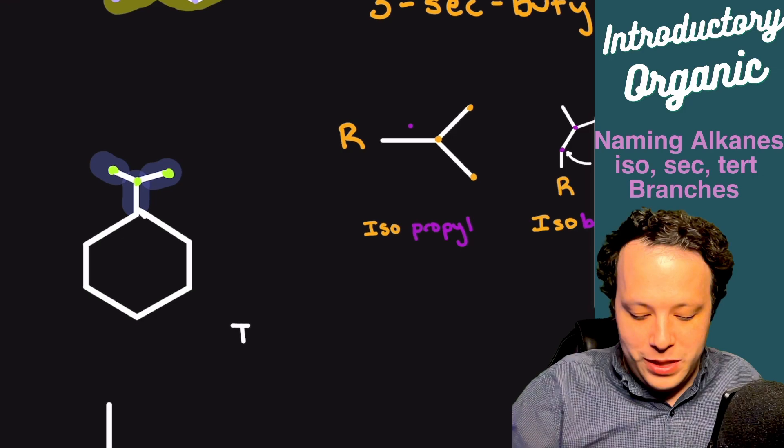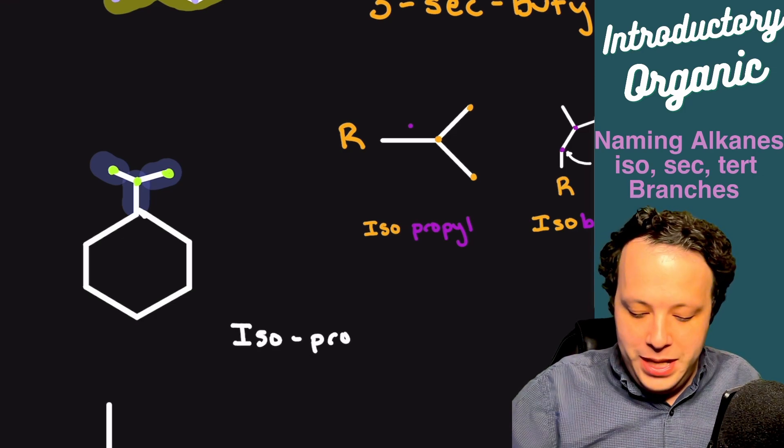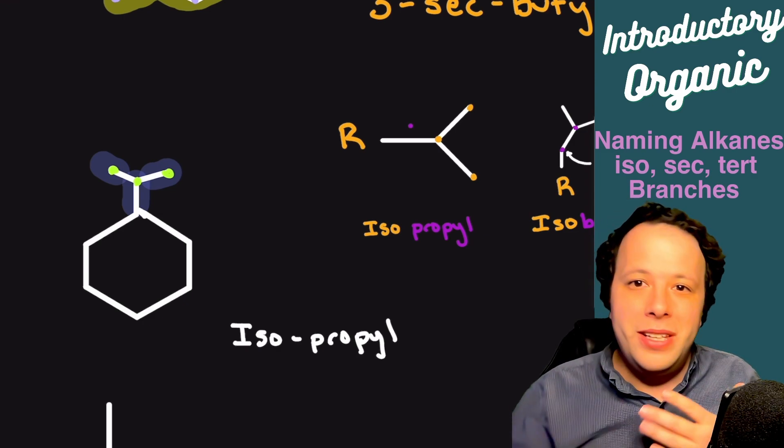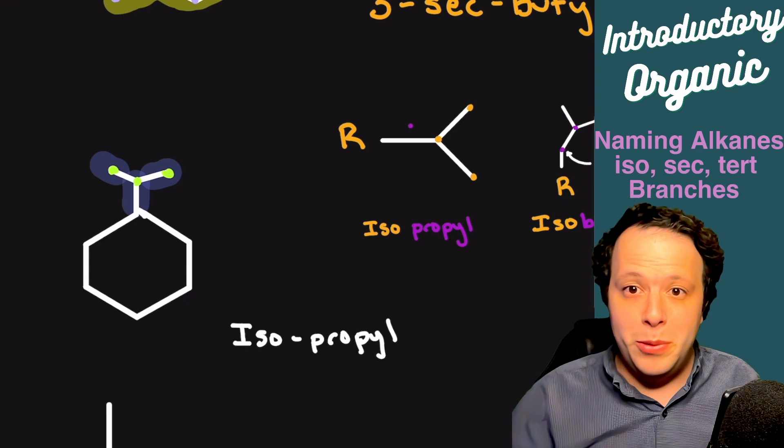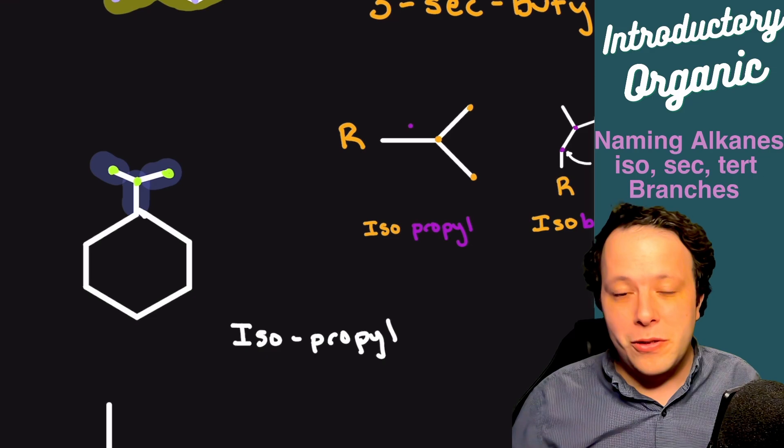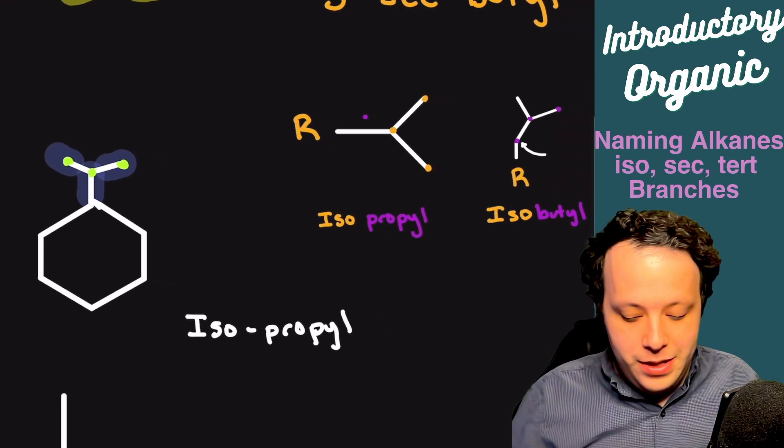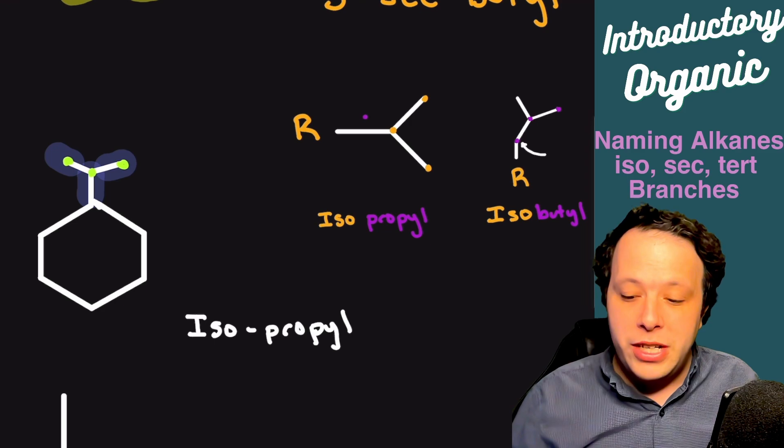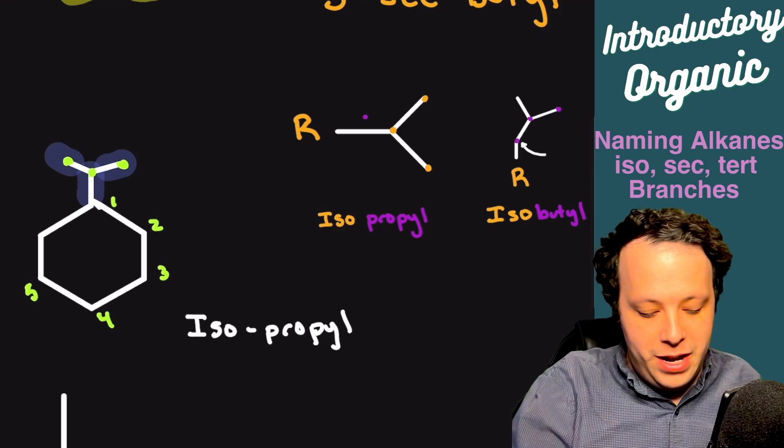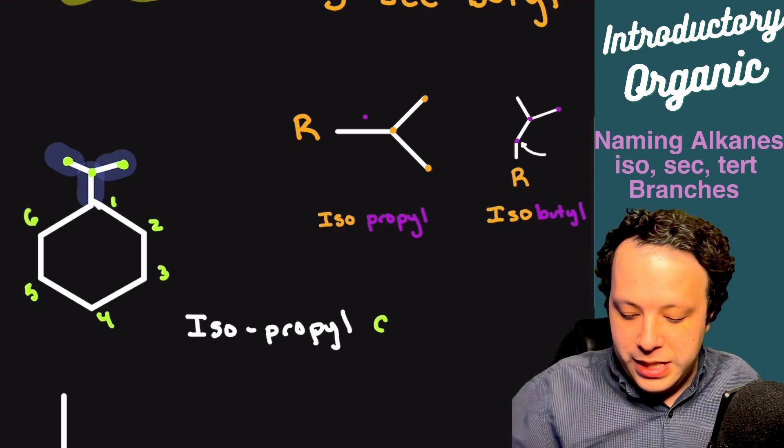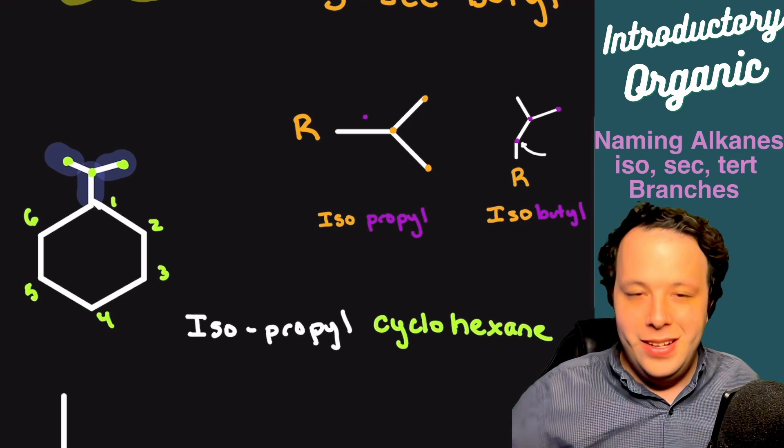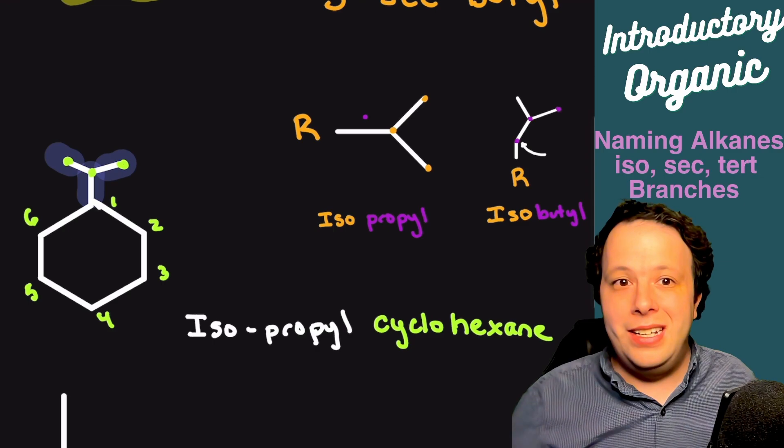We're going to start by writing down isopropyl. Being that it's a ring structure and it's the only branch, you do not have to number it. The only time you do have to go through numbering is if you have multiple branches. In that case, you want to go via priority, whatever is the most important thing, typically functional groups. Being that this is a ring structure, we count how many carbons we have. We have one, two, three, four, five, and six. We use the prefix cyclo for a ring, and being that it is six, it's going to be cyclohexane. So isopropyl cyclohexane would be the complete name.